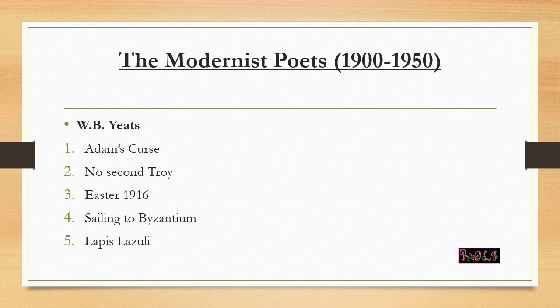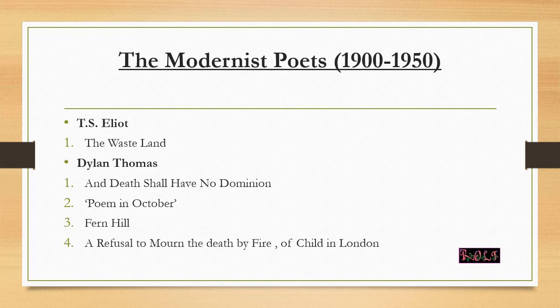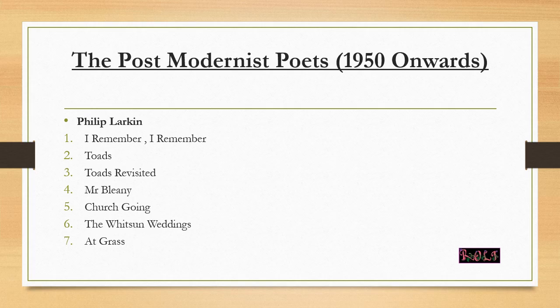After the Victorian period we have the Modernist poets, from 1900 to 1915. Important poets include W.B. Yeats with Adam's Curse, No Second Troy, Easter 1916, Sailing to Byzantium, and Lapis Lazuli. T.S. Eliot is also very important from an exam point of view — The Waste Land is a sure short-answer question. We also have Dylan Thomas with Death Shall Have No Dominion, Poem in October, Fern Hill, and A Refusal to Mourn the Death, by Fire, of a Child in London.